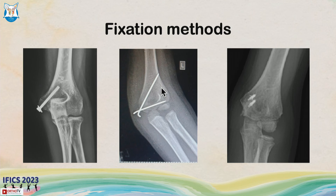Various fixation modalities have been described. Most commonly, a single 4 mm cannulated cancellous screw with a washer is used. This need not be bicortical — a unicortical screw provides a good hold. Alternatively, K-wires can be used, and some surgeons have also described the use of suture anchors.